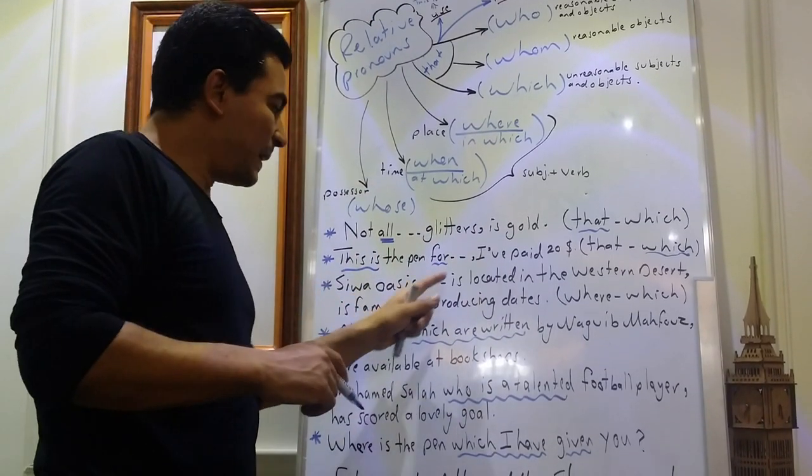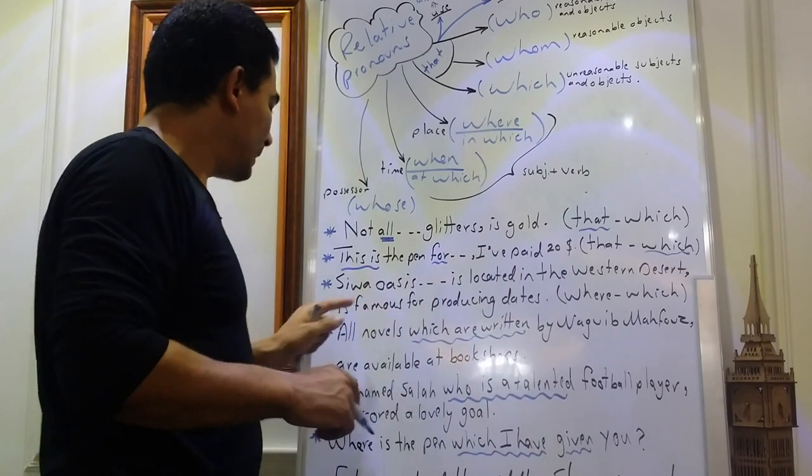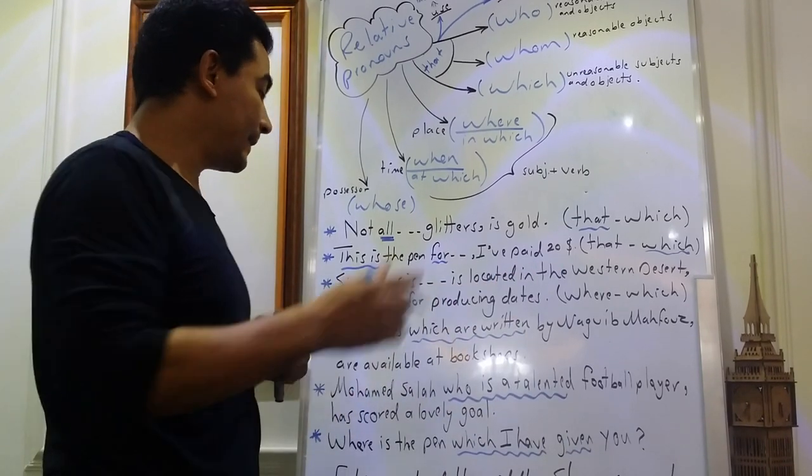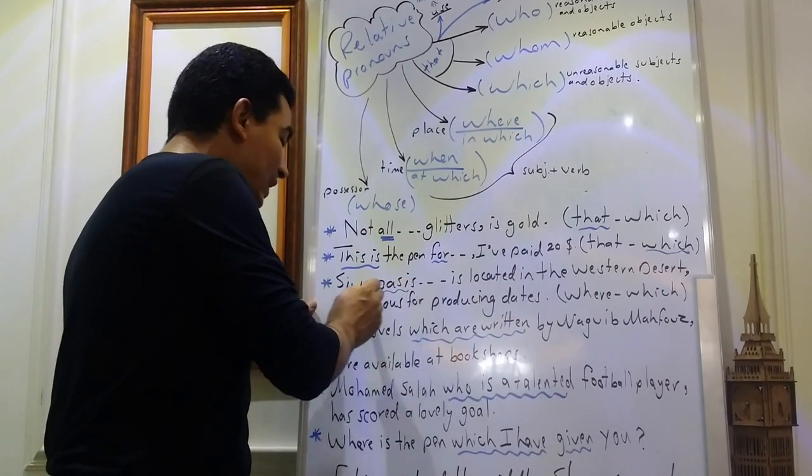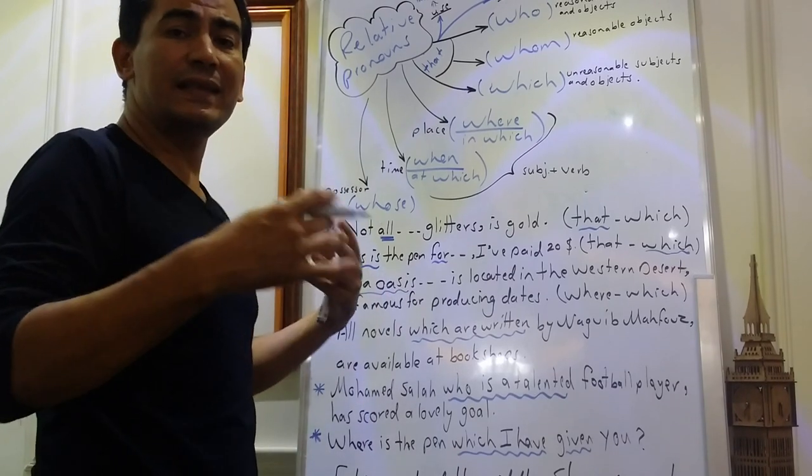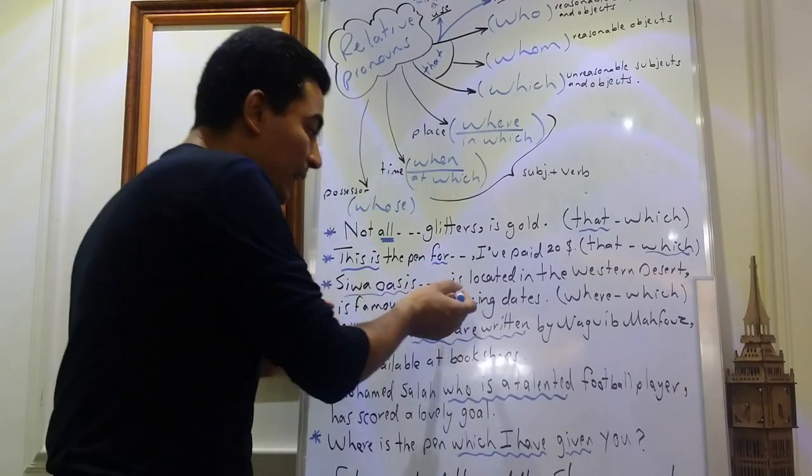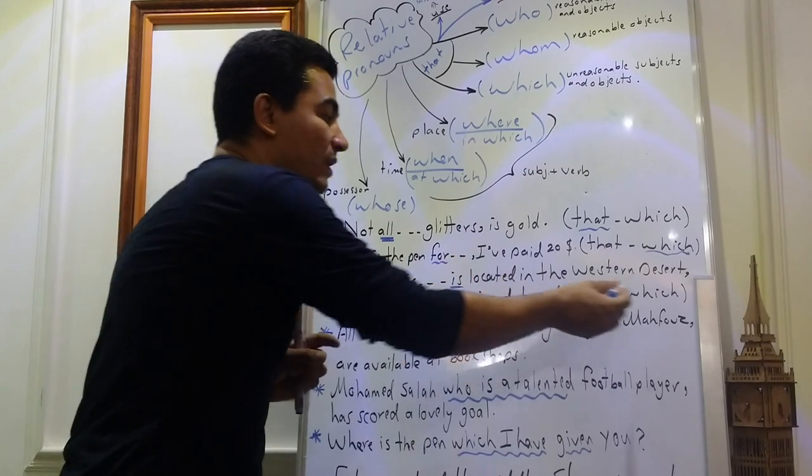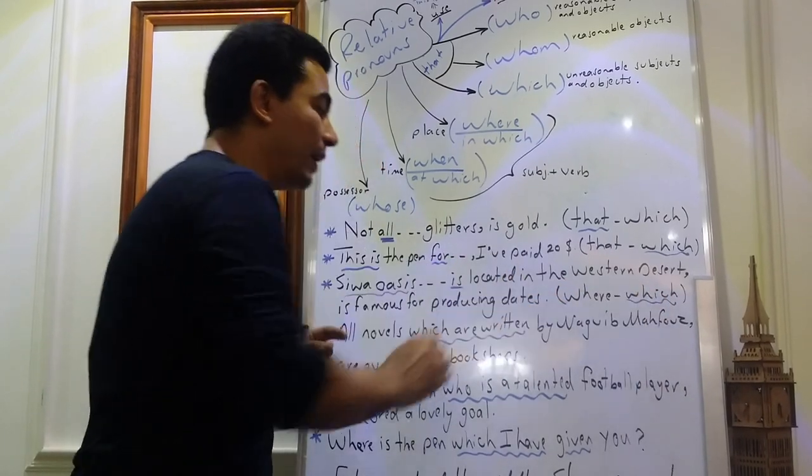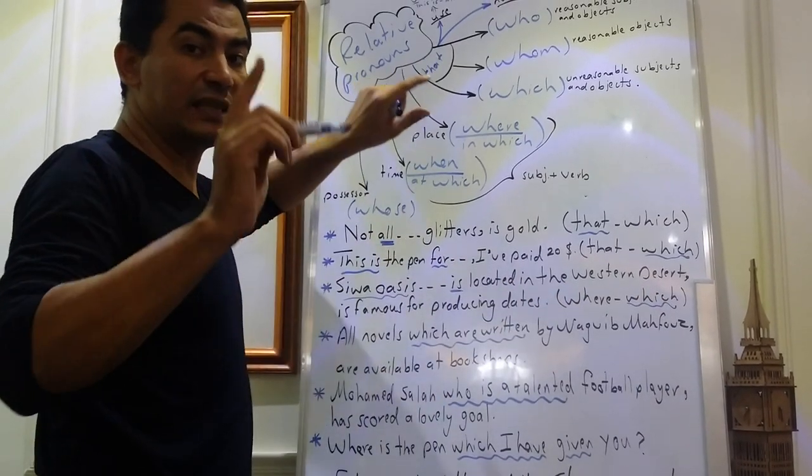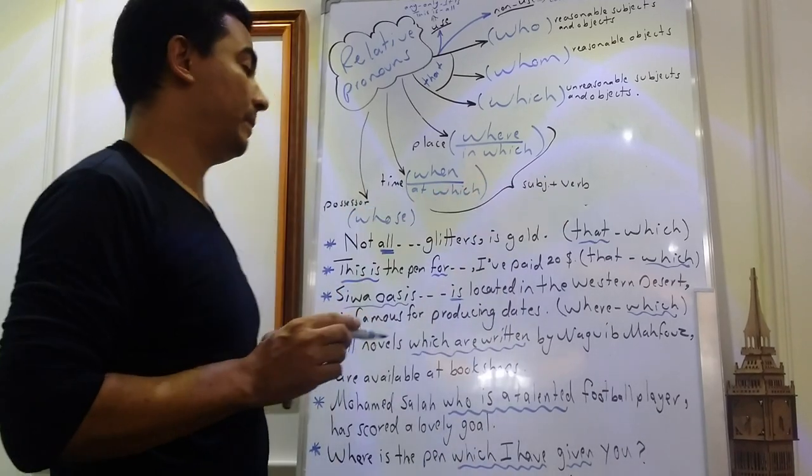Next, Siwa Oasis, which is located in the western desert, is famous for producing dates. Once we have seen Siwa Oasis, we think that this is a place. But take care, we have here verb. So we are supposed to use which, not where. Because where is supposed to be followed by subject and verb.